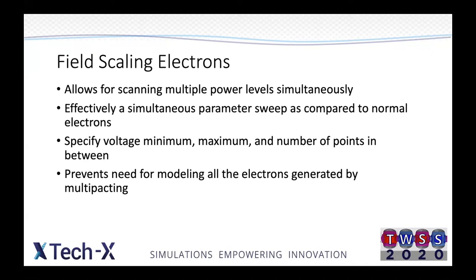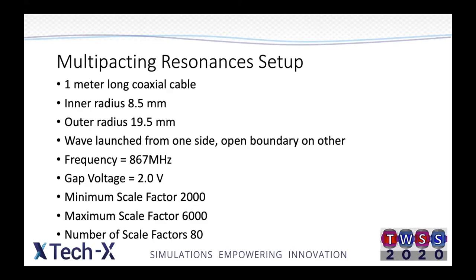This also prevents the need for modeling all of the electrons generated by multipacting. With the exponential growth in electrons, a simulation can slow down significantly as you try to track all of those electrons, whereas in this case the number of electrons will remain the same. For the multipacking resonances example, the setup is a one-meter-long coaxial cable with an inner radius of 8.5 mm and outer radius of 19.5 mm. A wave is launched from one side, at 867 MHz with a gap voltage of 2 volts, with a minimum scale factor of 2,000, maximum of 6,000, and 80 points in between.